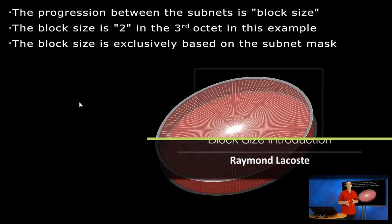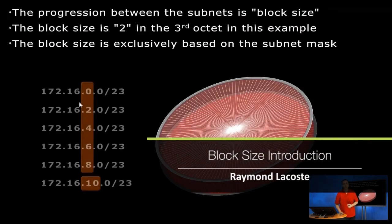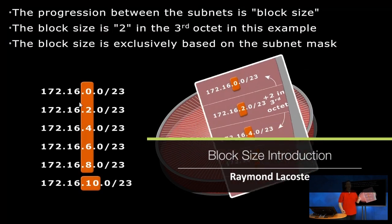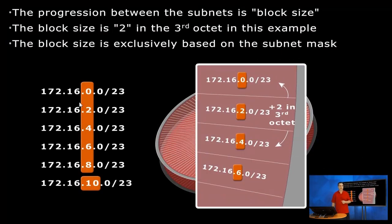So I've shown you an example whereby we had 172.16.0.0/23, and then 2.0/23, and then 4.0/23, and so on and so forth. But the question now is how do we figure this out?